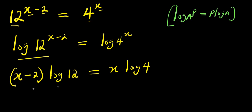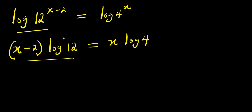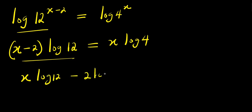Now let's expand this. We are going to have x times log 12 minus 2 times log 12 equals x times log 4.